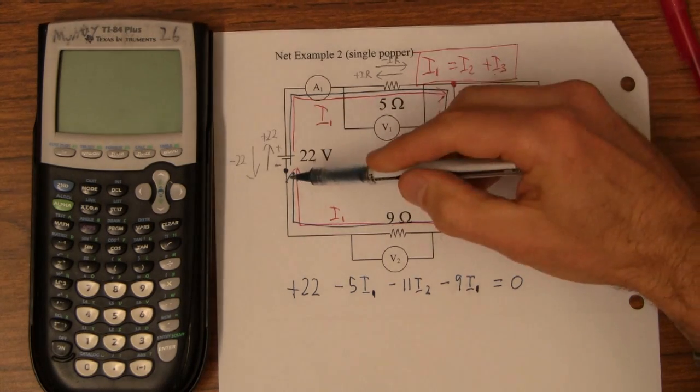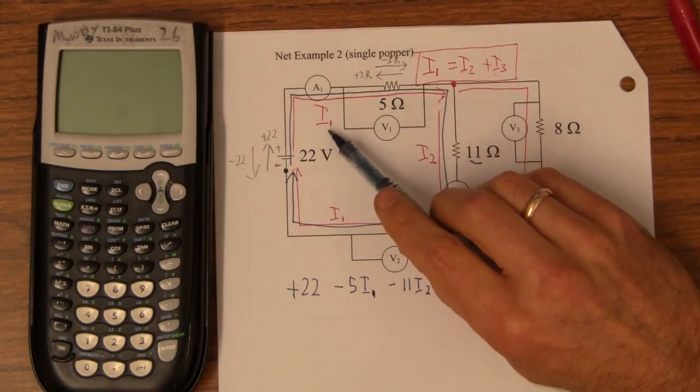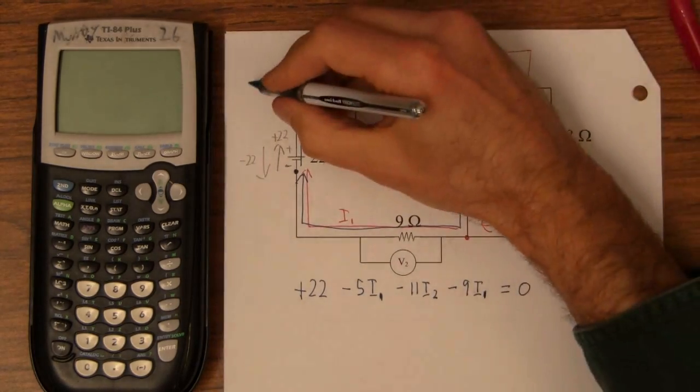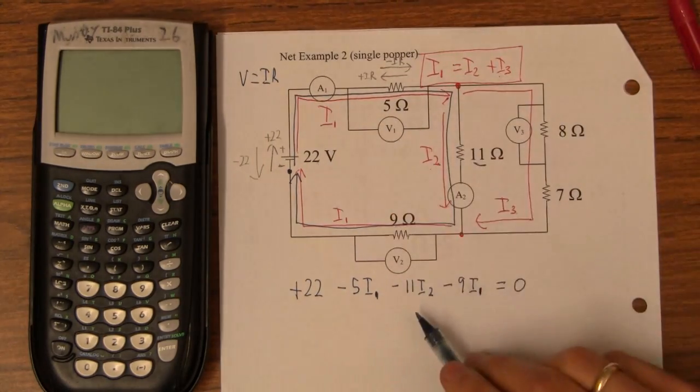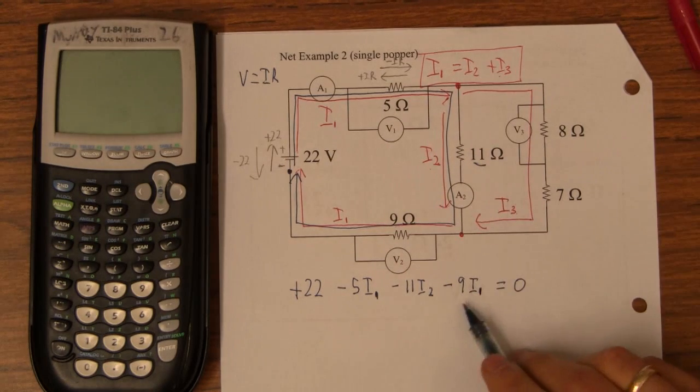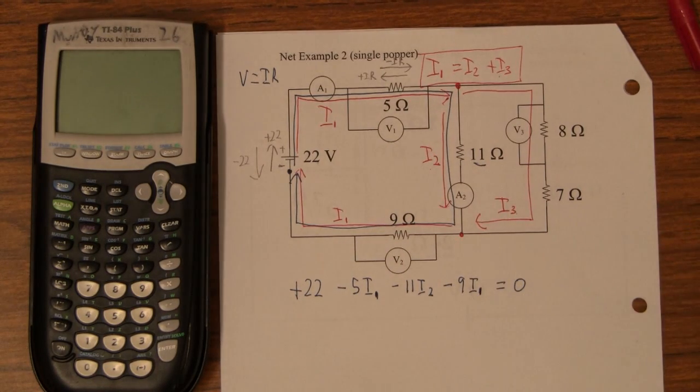So, let's just double-check that. Up 22. Down 5 times I1, because I'm using Ohm's Law. V equals IR. So, 5 times I1. Down 11 times I2. Down 9 times I1. And then I'm done.